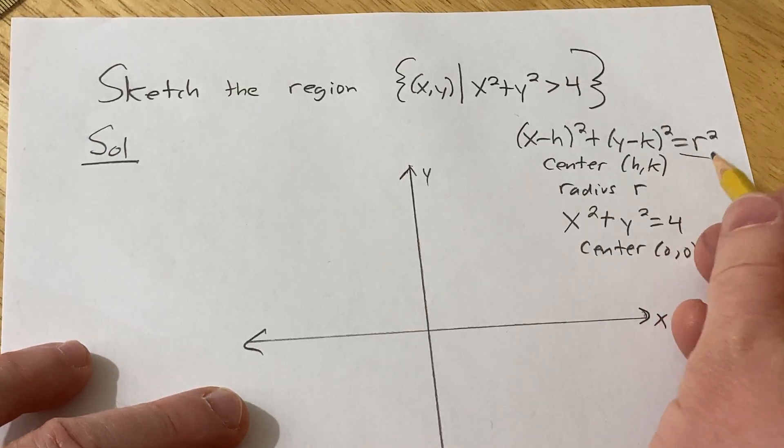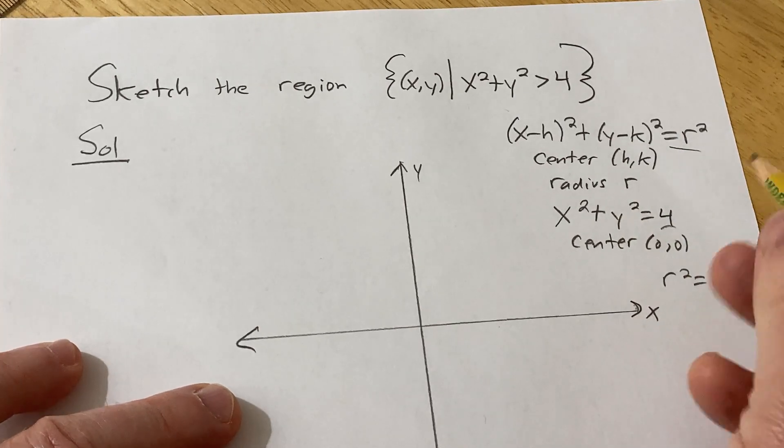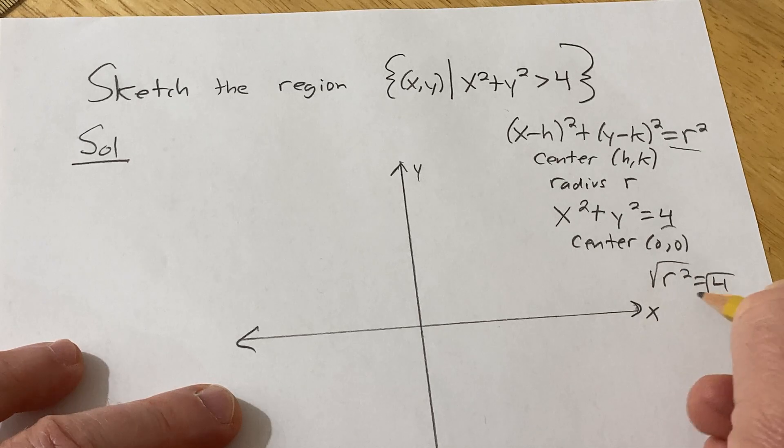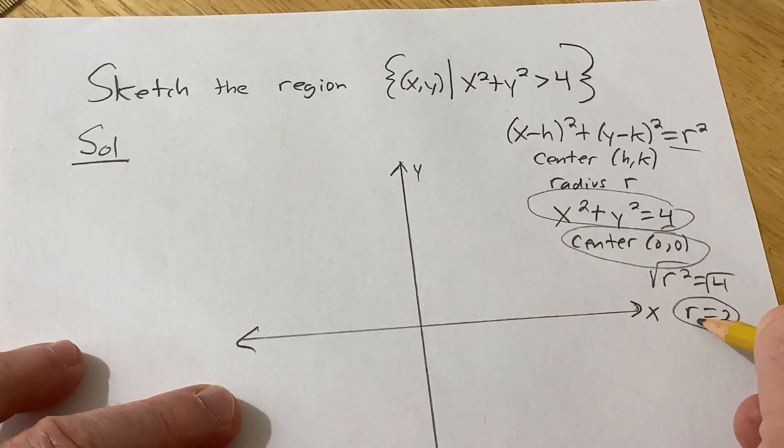And the radius is 2 because r² is equal to 4. And so when you set them equal, if you take the square root, you do get plus or minus 2, but a radius can't be negative, so it's just 2. So basically, this is a circle centered at the origin of radius 2.